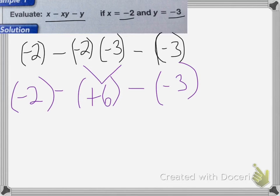Now we're going to add algebraically from left to right. So we have negative 2 minus a positive 6. That's going to be negative 8 minus a negative 3.